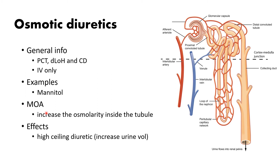The mechanism of action is very, very simple. They basically increase the osmolarity inside the tubule, which prevents water from being reabsorbed. So you just increase the volume of urine by making the filtrate higher in osmolarity.